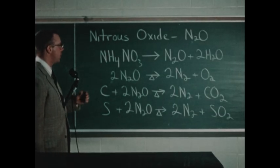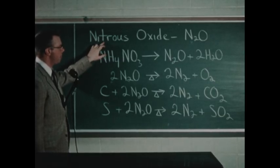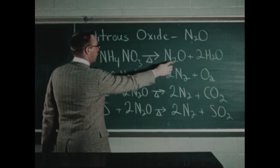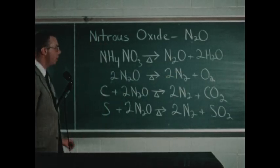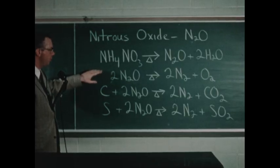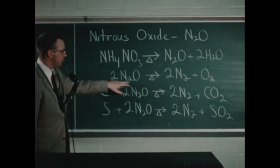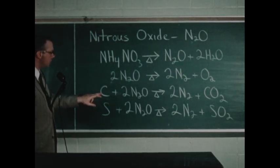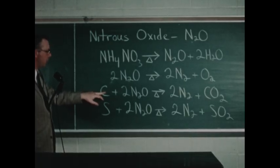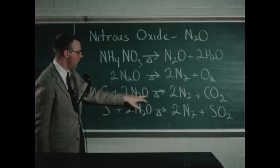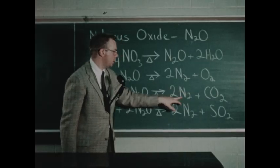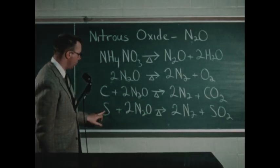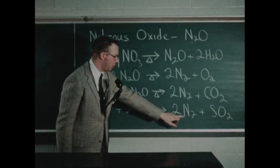The equations which have been illustrated in the section on nitrous oxide are as follows. First, we prepared the gas by heating ammonium nitrate with the production of nitrous oxide and water. Then, after testing the solubility of nitrous oxide in water, the statement was made that nitrous oxide can be fairly easily decomposed by heating to yield nitrogen and oxygen. And this statement was tested by inserting a glowing splint, which we can represent as carbon, into the nitrous oxide. We saw that the splint burst into flame with the production of carbon dioxide and nitrogen. Similarly, when burning sulfur was inserted into nitrous oxide, it burned more rapidly than in air, this time with the production of nitrogen and sulfur dioxide.